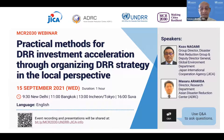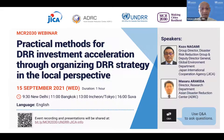Today we have one of the core partners of MCR 2030 with us: the Japan International Cooperation Agency, JICA, and with them is the Asian Disaster Reduction Center. The speakers are Dr. Nagami, the Group Director for Disaster Reduction and Deputy Director General, Global Environment Department, JICA, and Mr. Masaru Arakida, Director, Research Department of the Asian Disaster Reduction Center, ADRC. They will be talking about the eight steps methodology for developing local DRR strategies and how this can help to accelerate investments, and also give some examples. All of these tools and technical skills are available through MCR 2030.